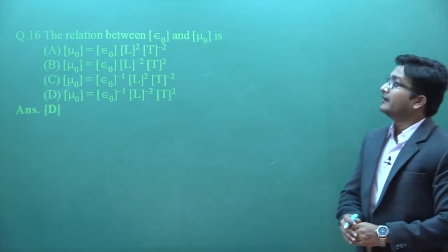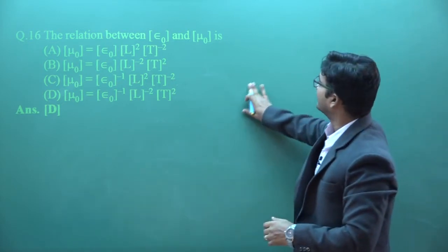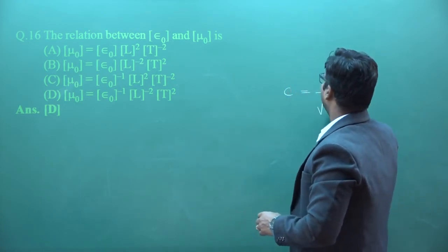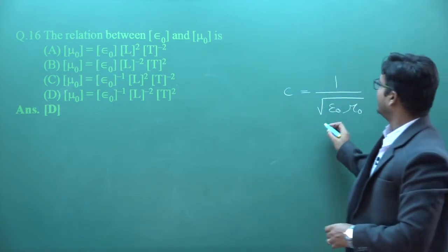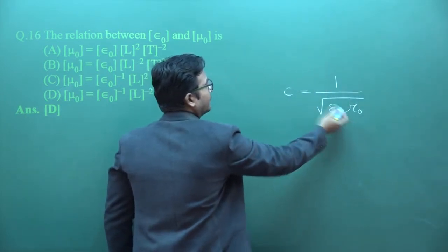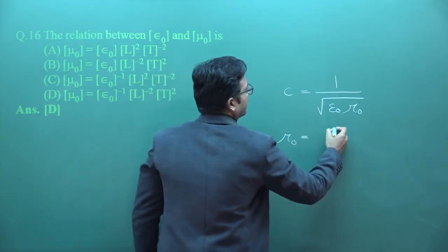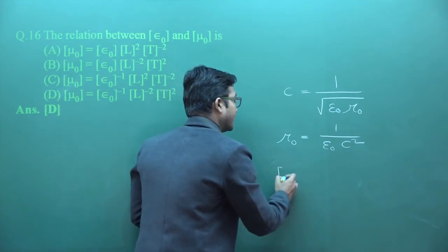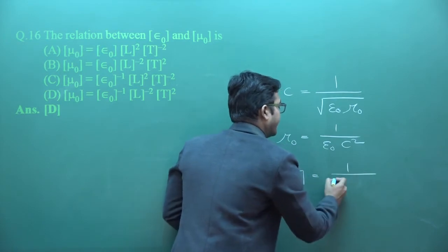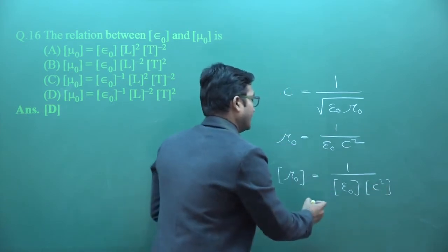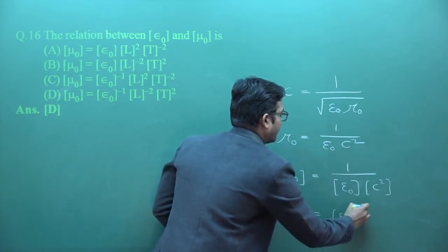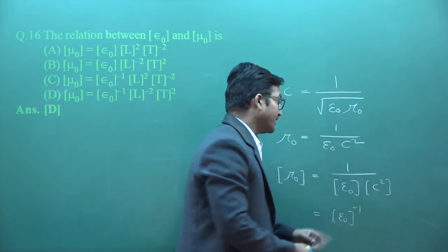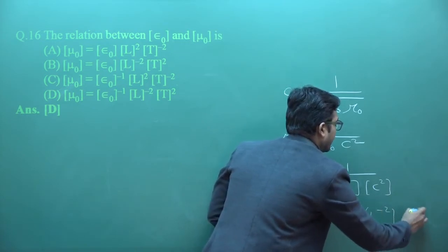The next question asks about the relation between dimensions of ε₀ and μ₀. The speed of light equals 1 divided by square root of ε₀μ₀. Squaring this gives μ₀ = 1 / (ε₀ C²). Converting to dimensions: dimension of μ₀ equals dimension of ε₀ to the power −1, multiplied by C² which is L²T⁻². So the result involves ε₀⁻¹ L⁻² T².